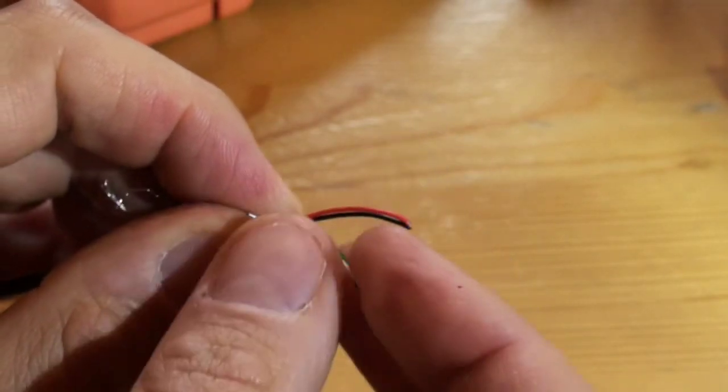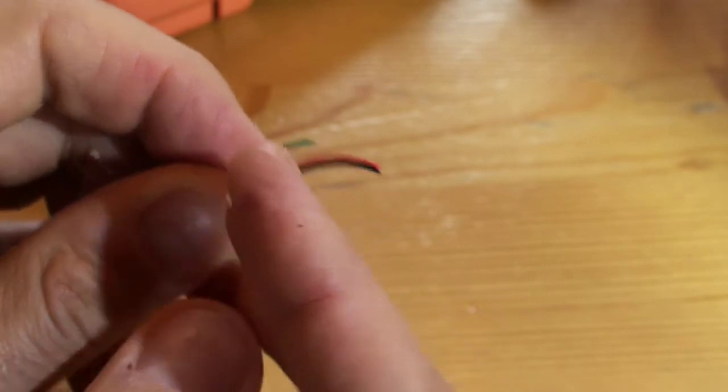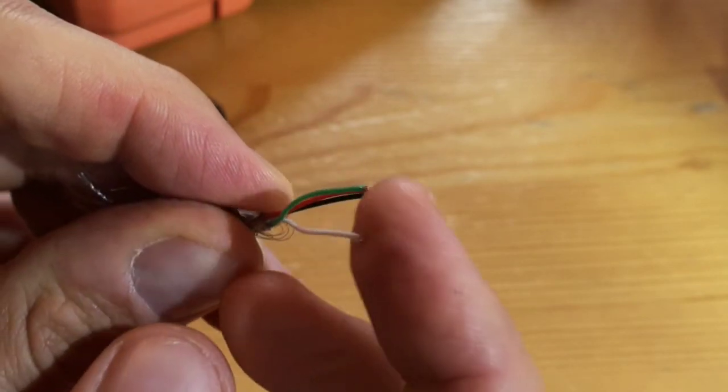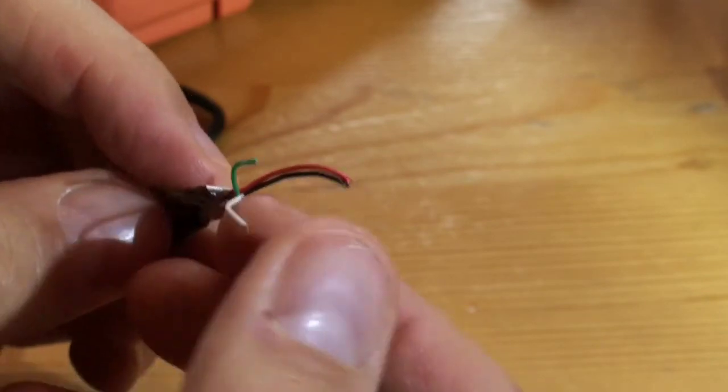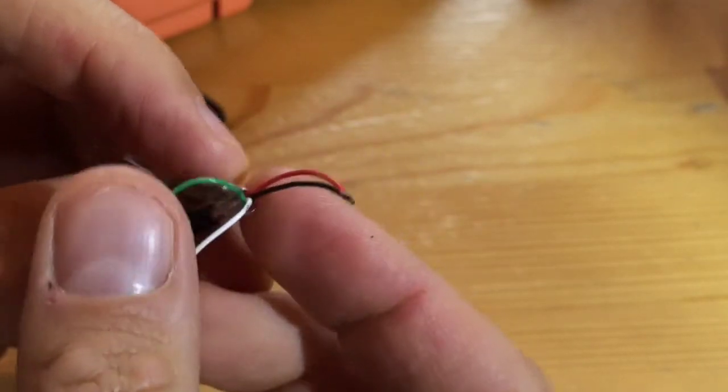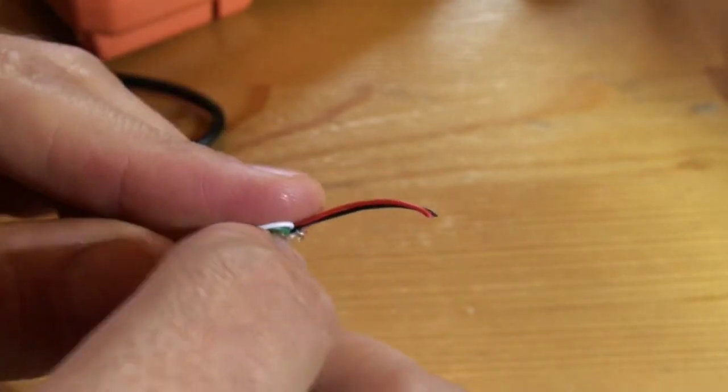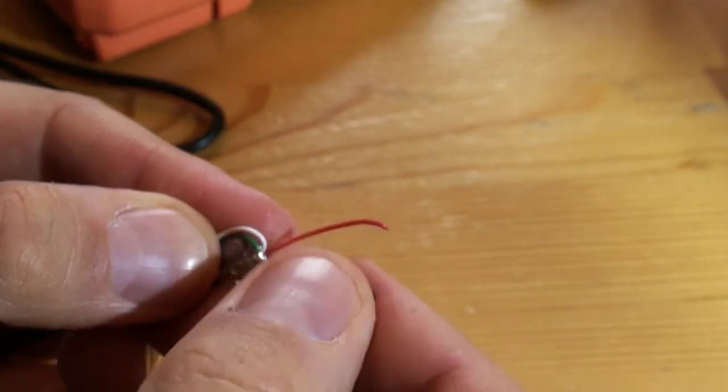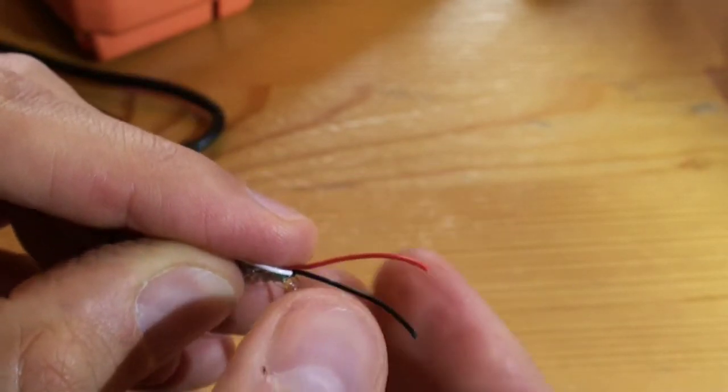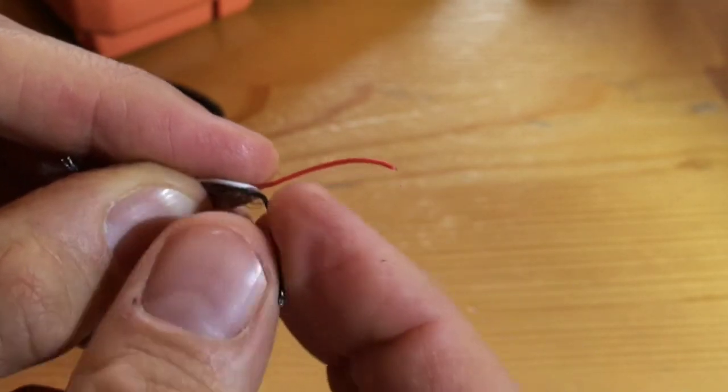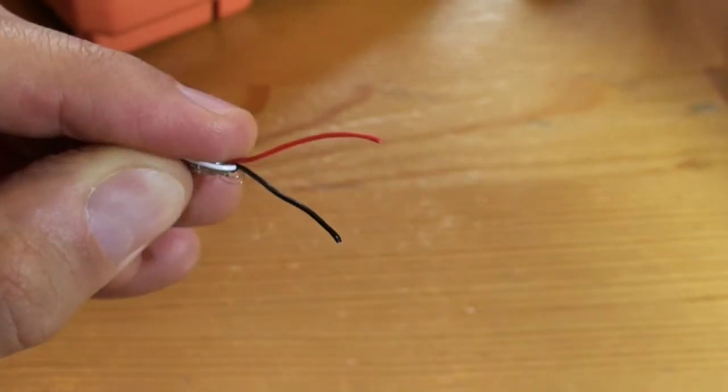Then you have here green and white, the data cables which we do not need here in that context. And then we have black which is minus and red which is plus voltage and we need that for further work.